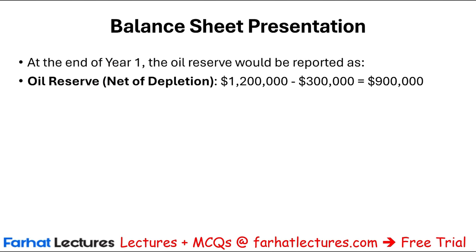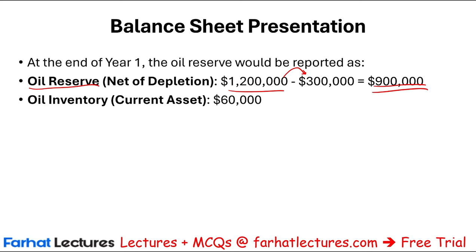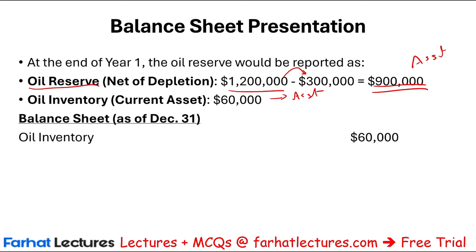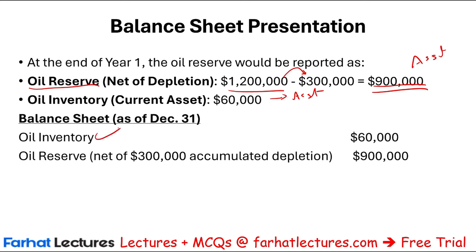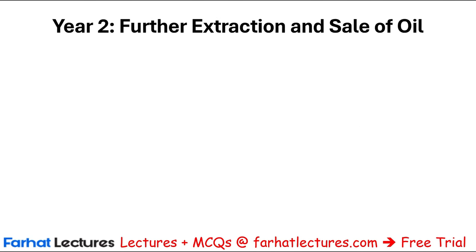At the end of year one, the oil reserve asset started at $1.2 million. After accumulated depletion of $300,000, the book value of the oil reserve is $900,000. Additionally, the balance sheet shows oil inventory of $60,000 as a separate current asset.